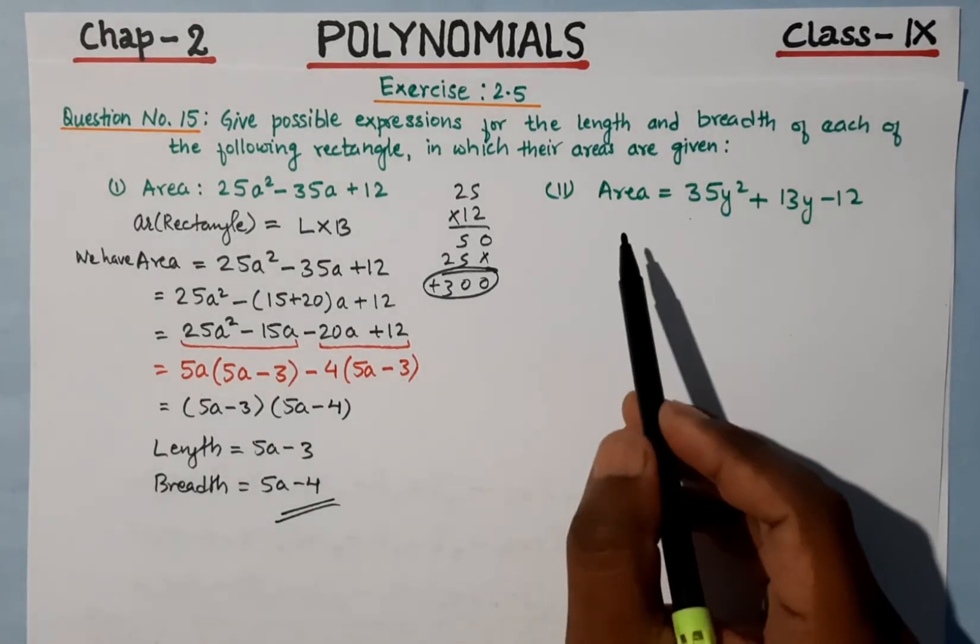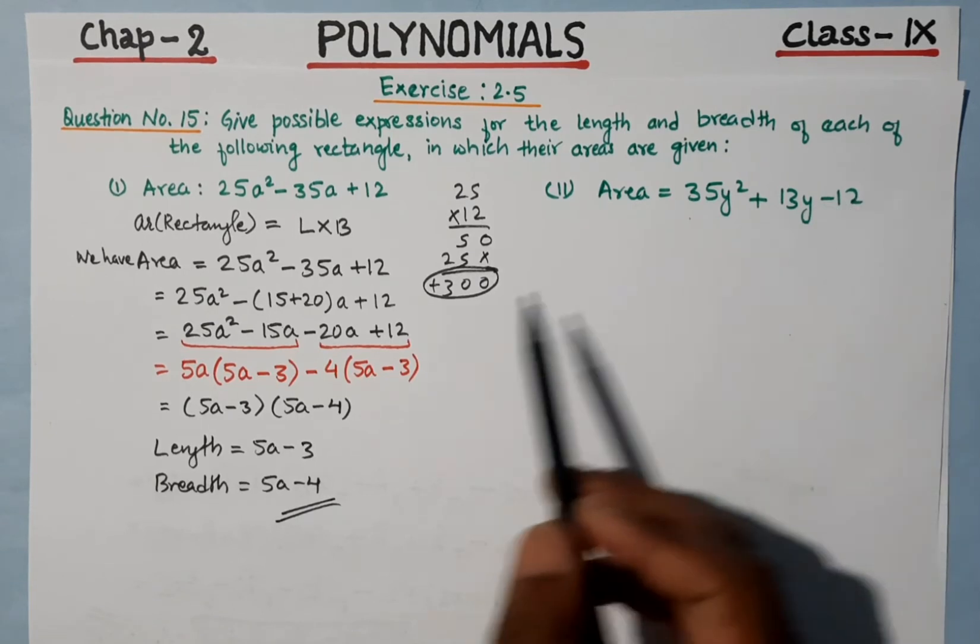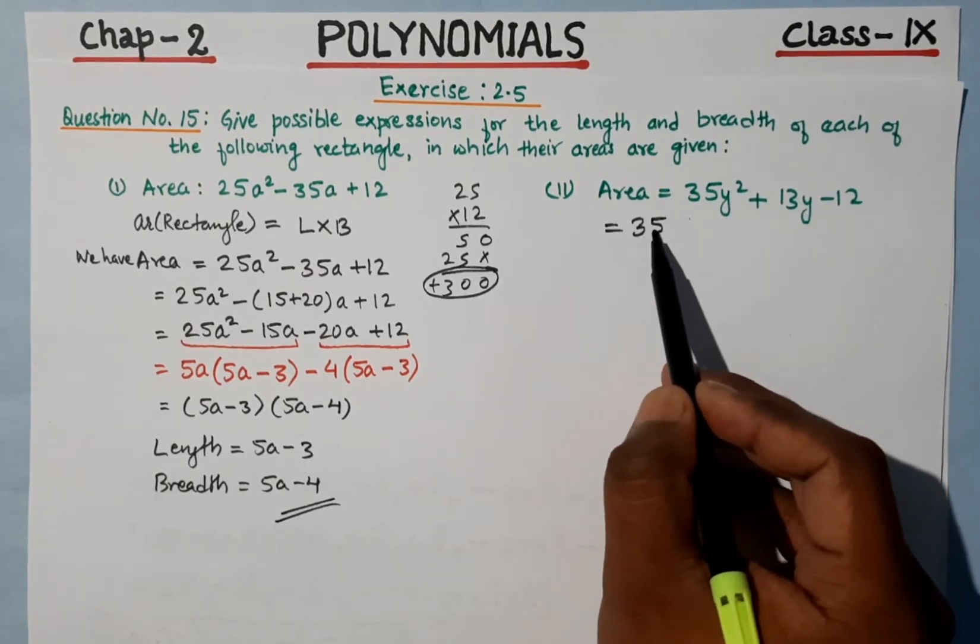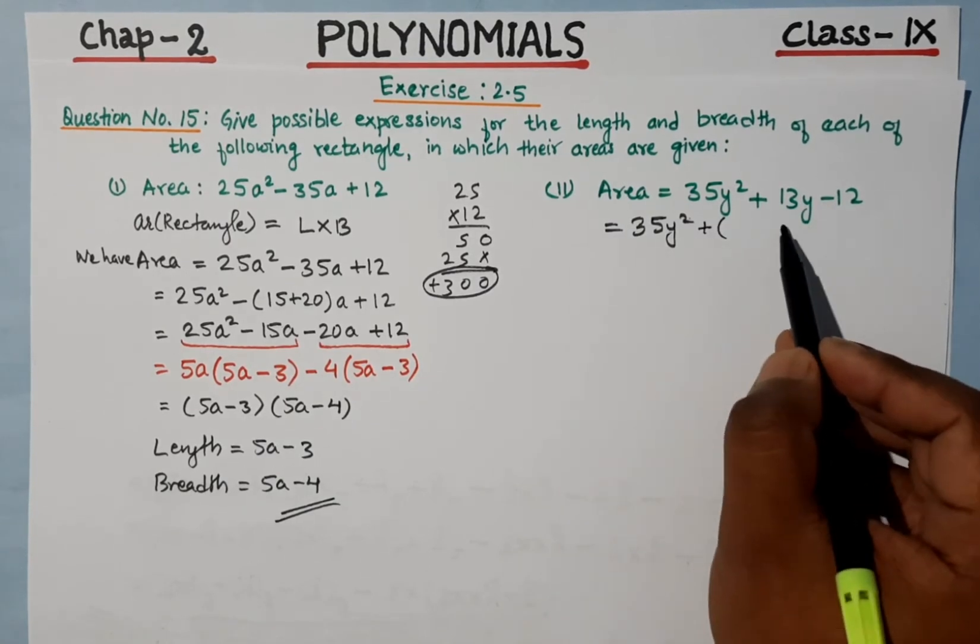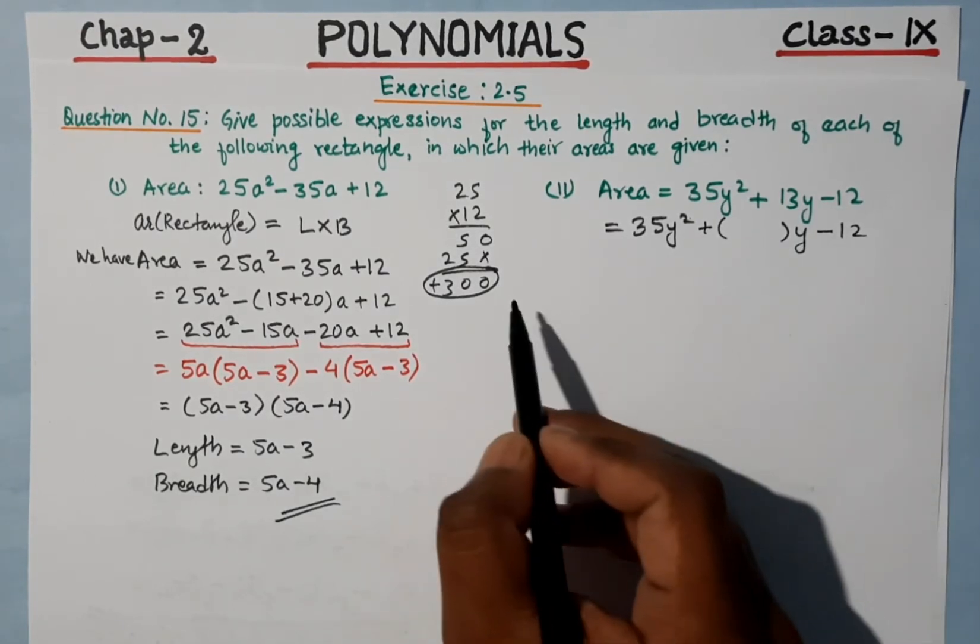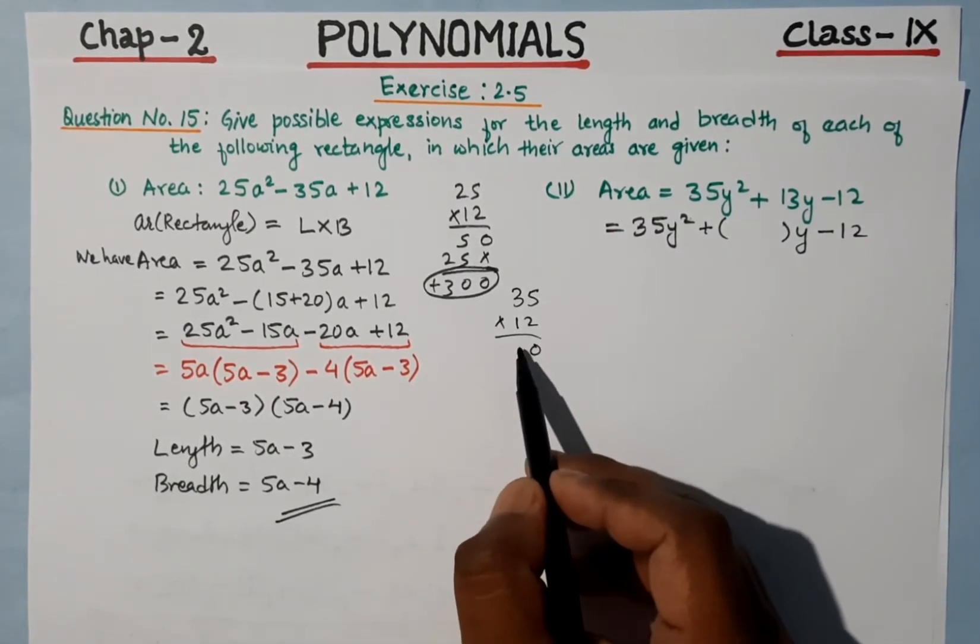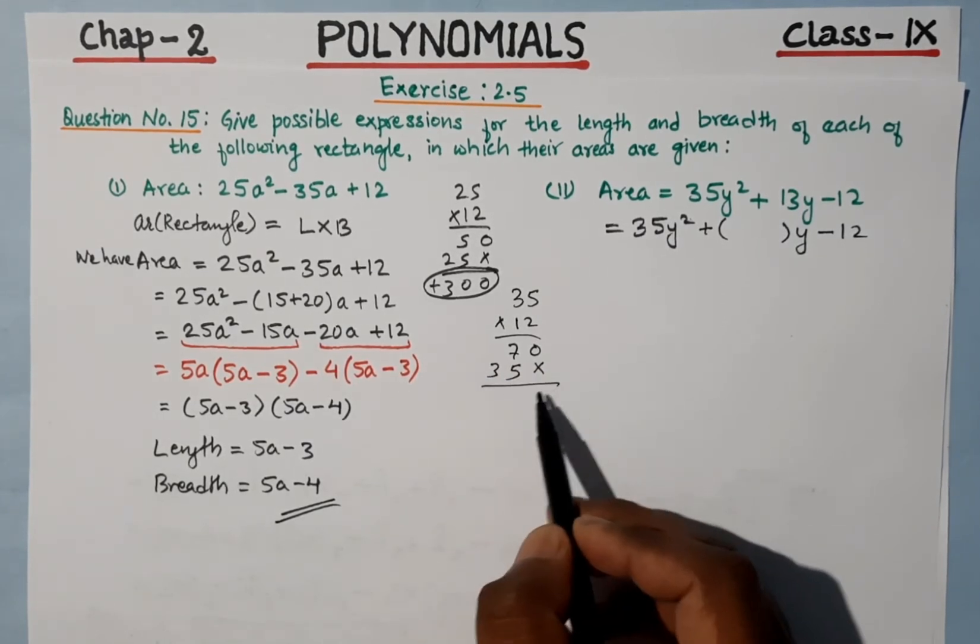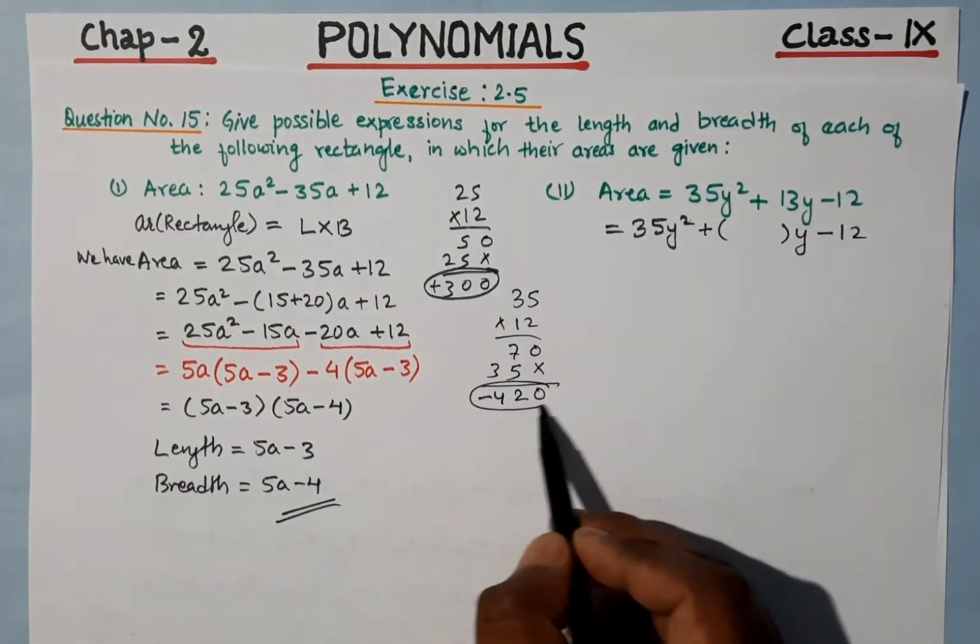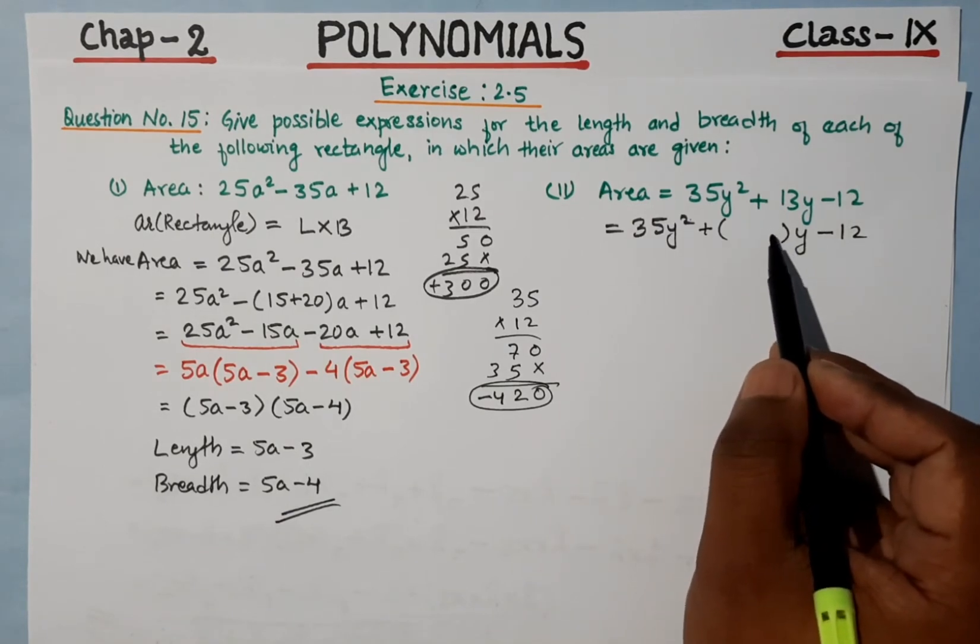Now question number 2: Area is equal to 35y² + 13y - 12. We will factorize this the same way.